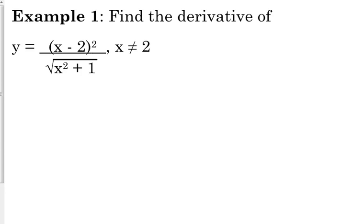Okay, so what we're going to do is apply the natural log to both sides of this equation. On the left side we have the natural log of y. On the right side we have the natural log of this whole quotient, x minus 2 squared over the square root of x squared plus 1.